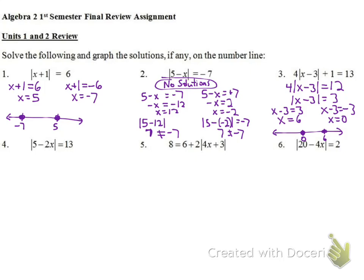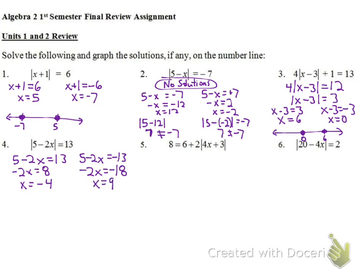Number 4: |5 - 2x| = 13. Setting up: 5 - 2x = 13 gives -2x = 8, so x = -4. And 5 - 2x = -13 gives -2x = -18, so x = 9. Checking: |5 + 8| = 13 ✓. |5 - 18| = |-13| = 13 ✓. Answers are x = -4 and x = 9.